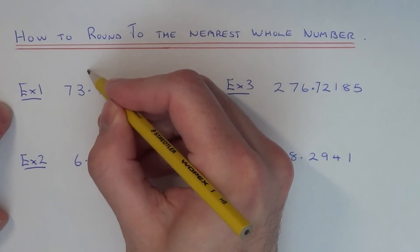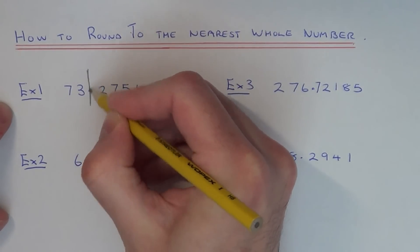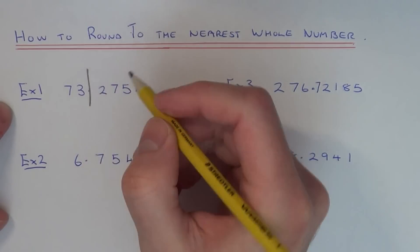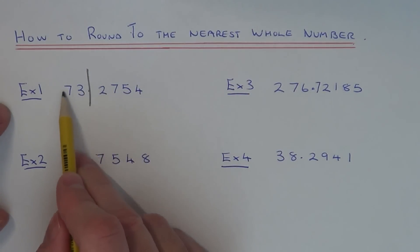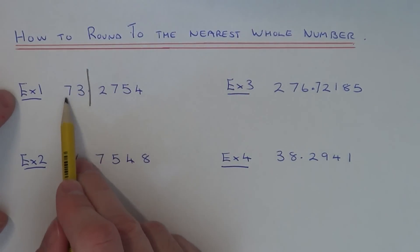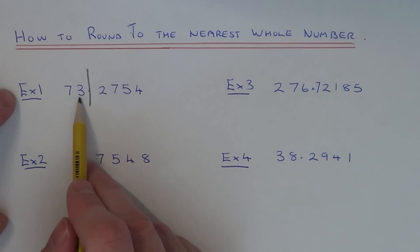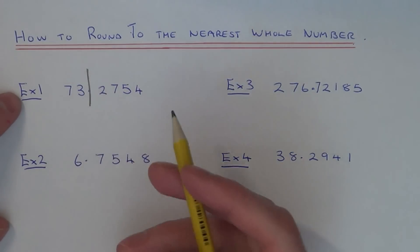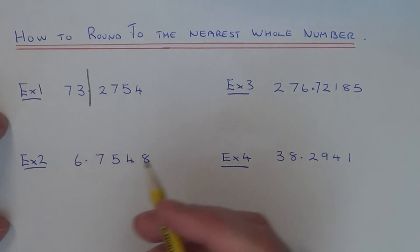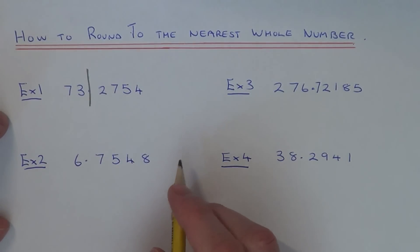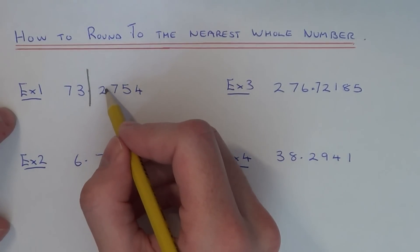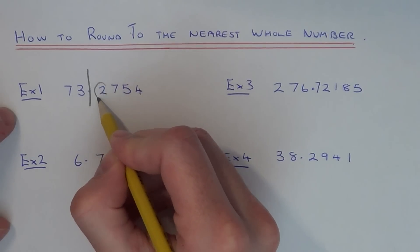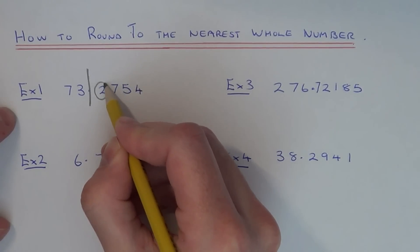That's exactly where the decimal point is, so we're breaking the number off there. If we round the number down it'll be 73, and if we round the number up it'll be 74. So we're going to decide which whole number it's closest to. The way you decide is just to look at the number straight away after the decimal point in the tenths column.